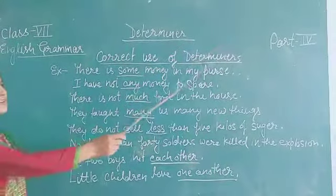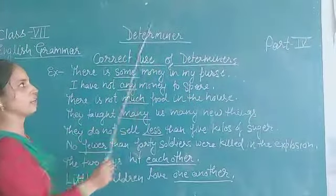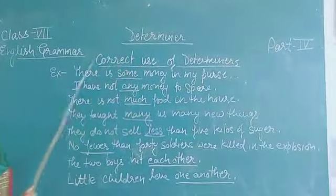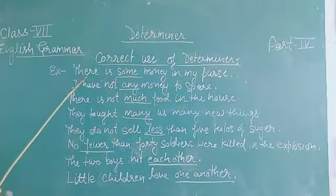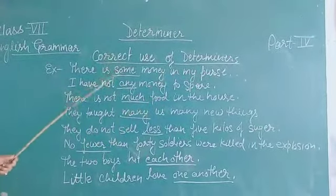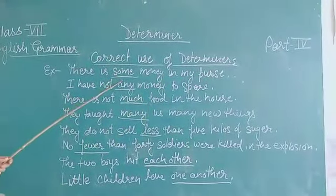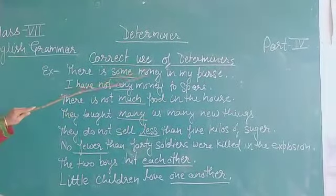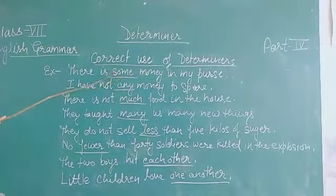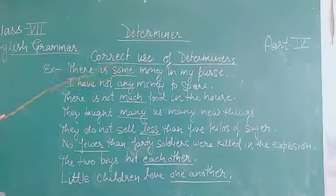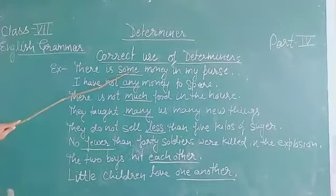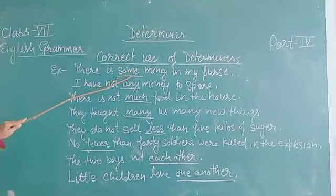Today we are going to start the fourth part of determinants — the correct use of determinants. Number one: there is some money in my purse. Here, 'some' is a determinant because it is used before a noun. Some is always used in a positive, affirmative way.